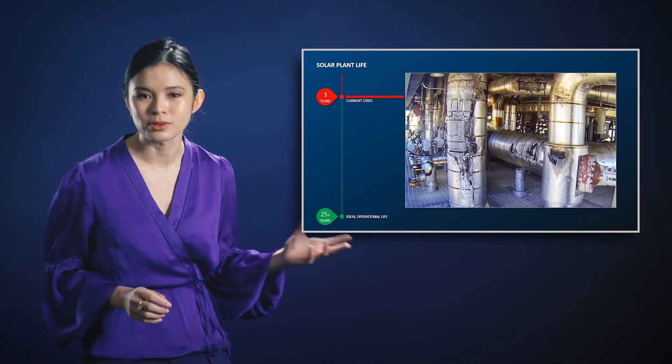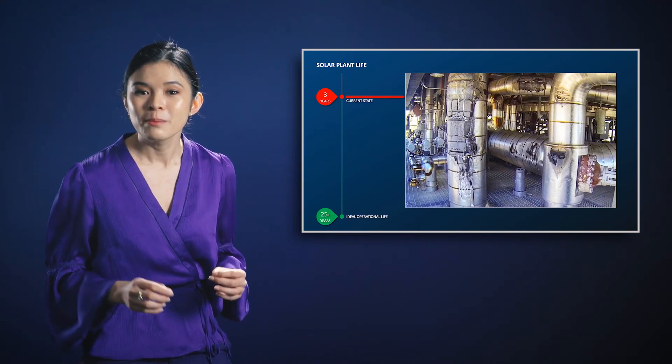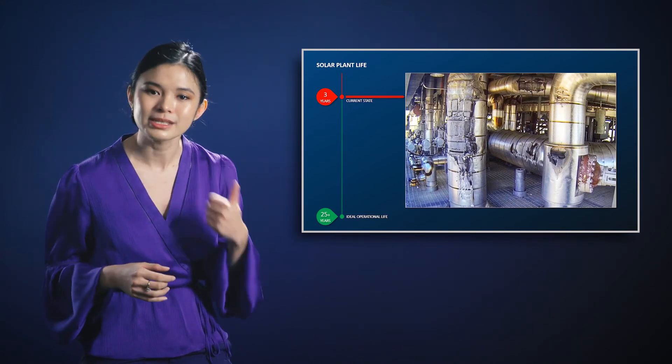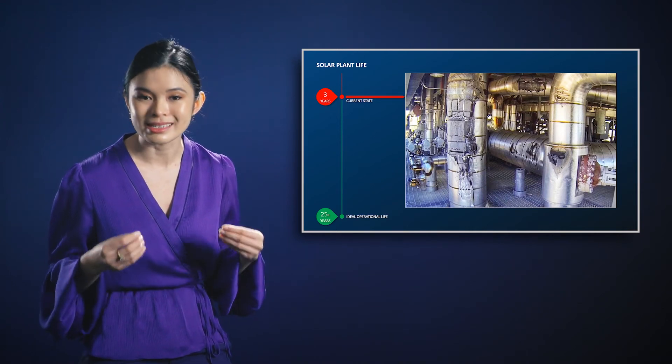Corrosion from the molten salts reduces fatigue life by attacking the metals, introducing surface roughness and weakening the materials itself.